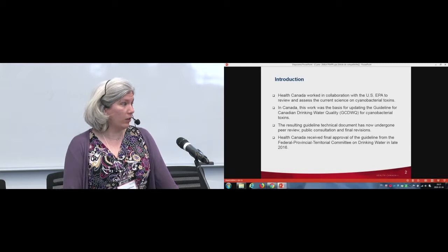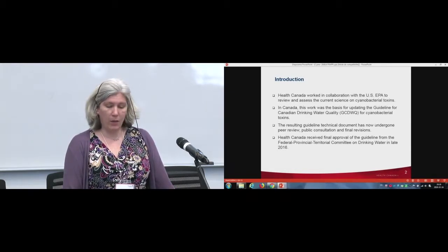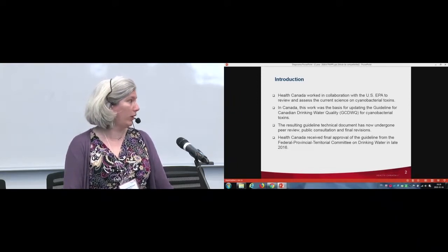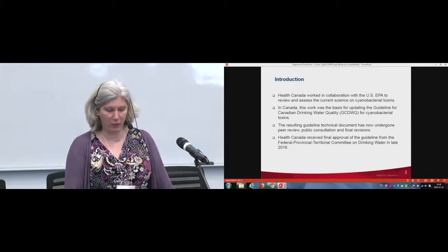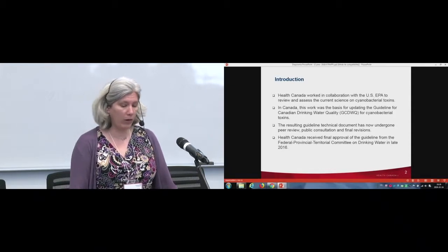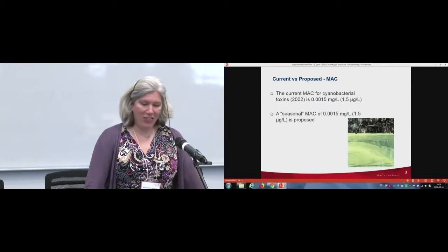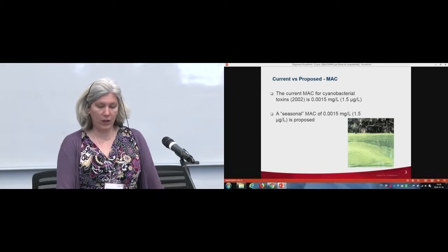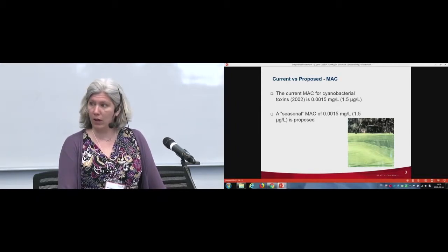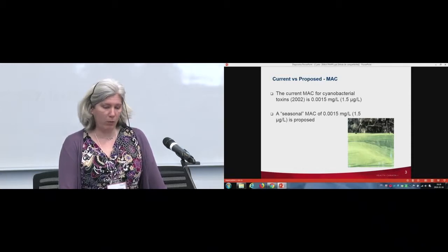The resulting guideline technical document has now undergone peer review as well as public consultation and has undergone its final revisions. We are just now in the eternal federal government process of trying to actually get that published someday soon. It has actually been approved as a final guideline by the Federal Provincial Territorial Committee on Drinking Water since late 2016. The current maximum acceptable concentration for cyanobacterial toxins dates back to 2002 and it is 1.5 micrograms per litre.